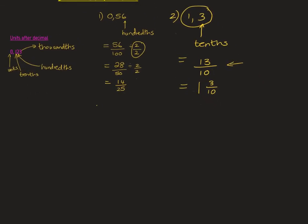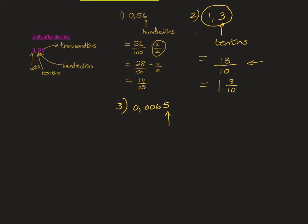Number three from your worksheet is 0.0065. You've got to see where you're landing up. We have units, tenths, hundredths, thousandths — but now we are beyond that, which means we're going into ten-thousandths. So you're going to put it over ten thousand, giving you 65 over 10,000.